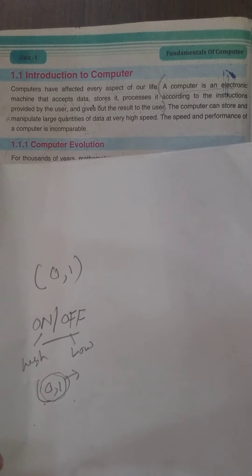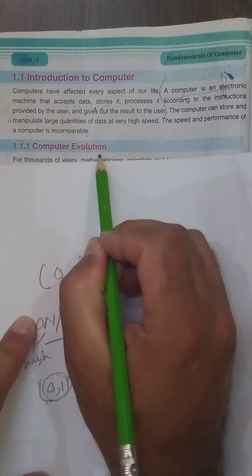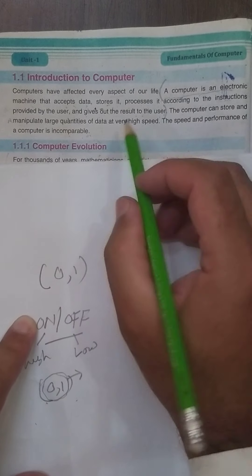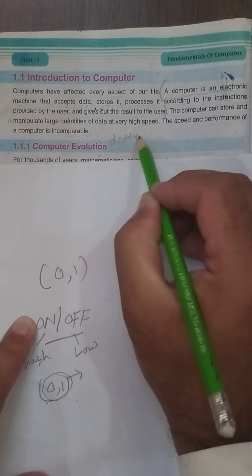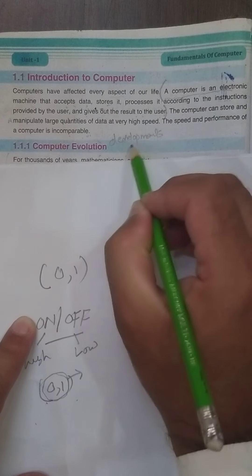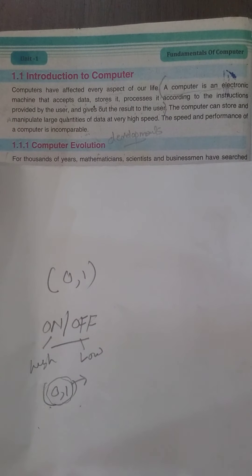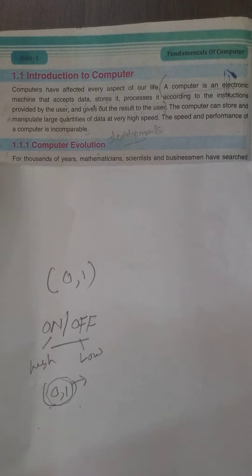اس کے بعد ہمارے پاس next topic ہے: Computer Evolution۔ Evolution کا مطلب ہے development — کس طرح computer میں developments ہوئیں، modern computer کا concept کیسے سامنے آیا۔ پرانے زمانے میں کوئی electronic devices یا modern technologies نہیں تھی جن پر large quantities میں addition subtraction کر سکتے — آہستہ آہستہ یہ computer evolution ہوئی۔